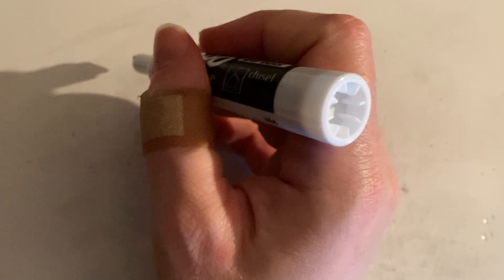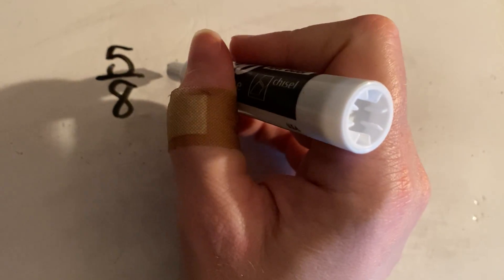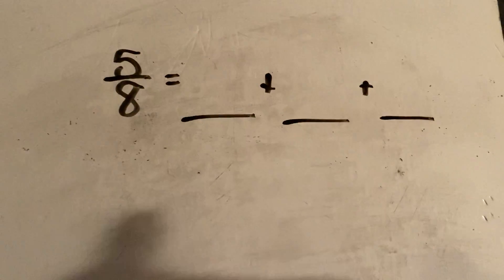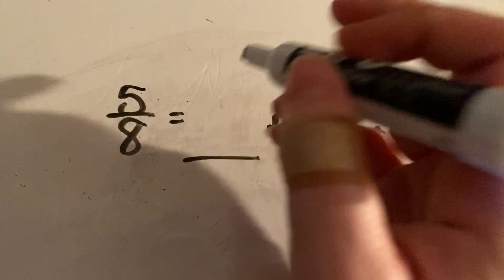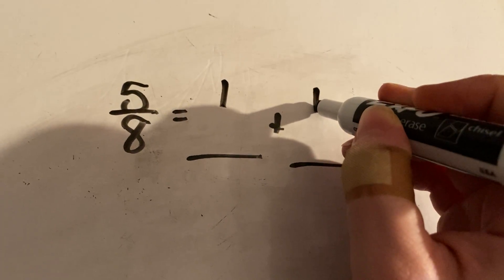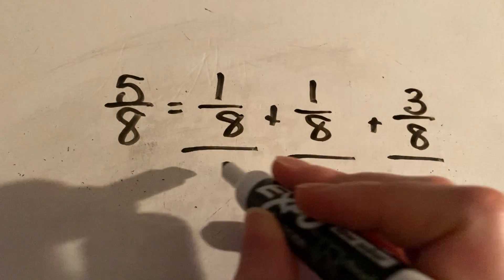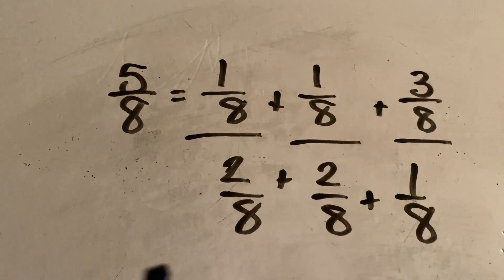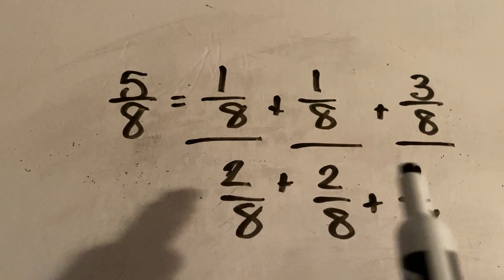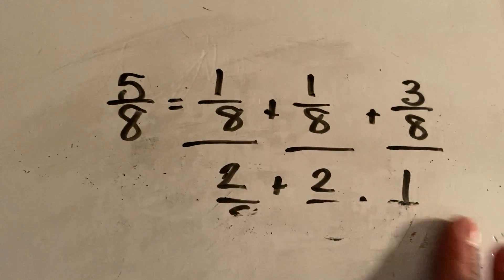Number five and six are just like number four. For example, five eighths equals something plus something plus something — they don't give you anything, you have to figure it out yourself. What are three numbers that add together to make five? Starting with one and one, that's two, and I need to get to five — it could be three. Or I could try two plus two plus one. The denominator always stays the same. Hopefully this video helps you with today's work. If you need any help or have any questions, just let me know.